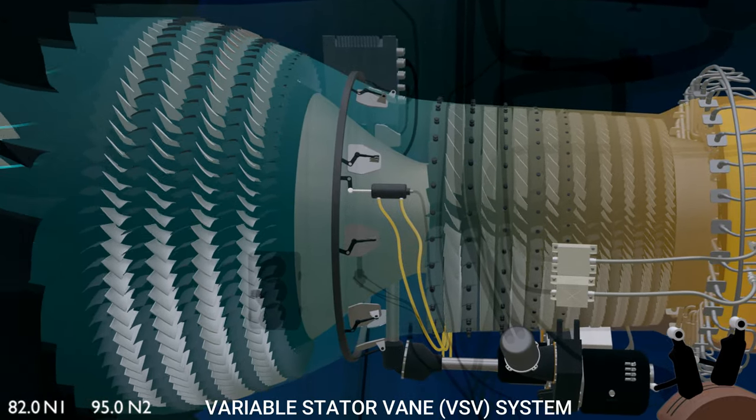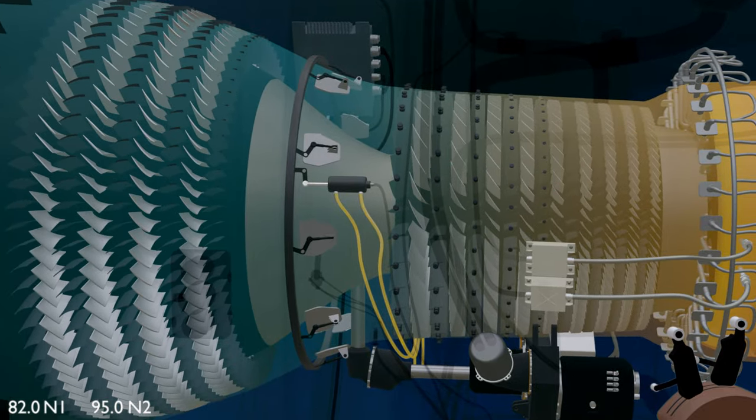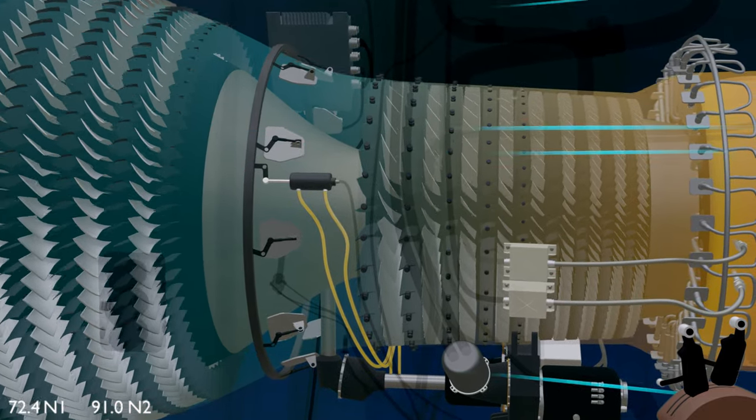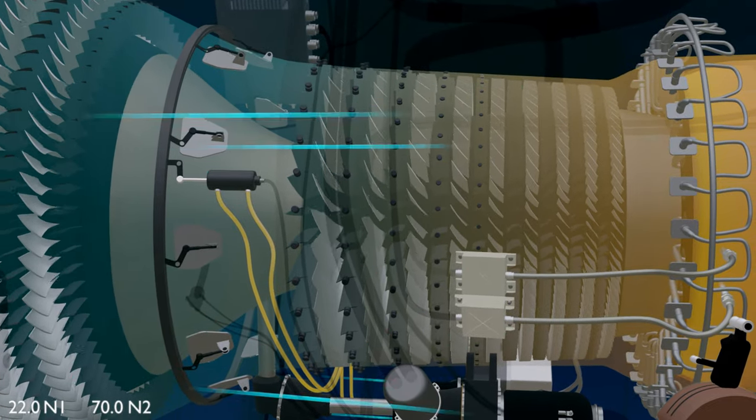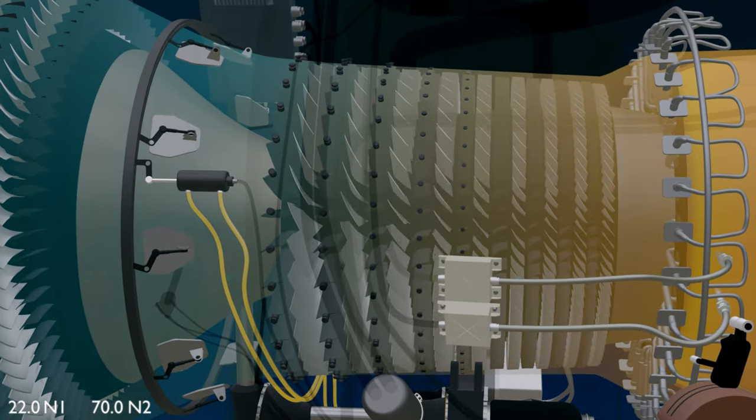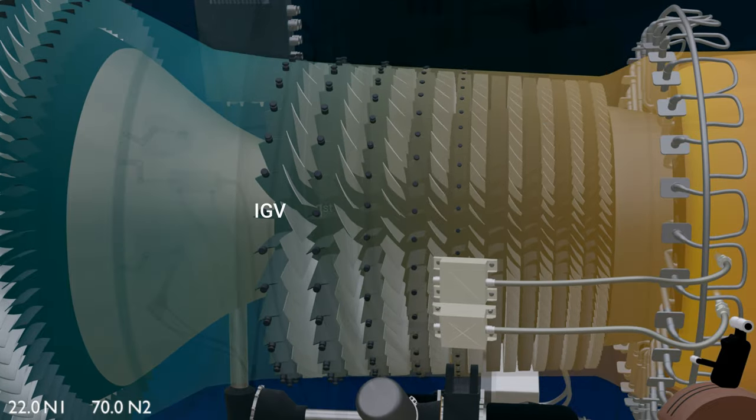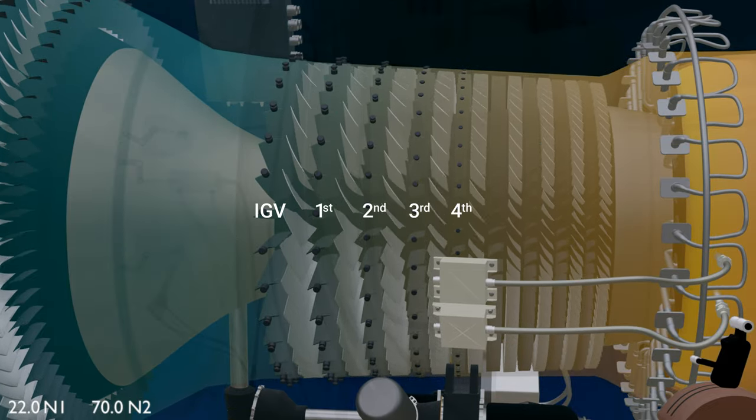The variable stator vanes supplement the VBV system in increasing the compressor efficiency at low speeds. The VSV system controls the airflow in the high-pressure compressor by controlling five stages: inlet guide vanes, first, second, third, and fourth stator stages.